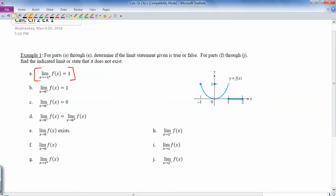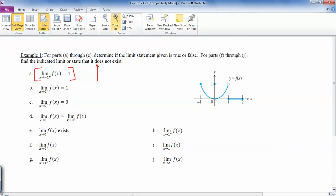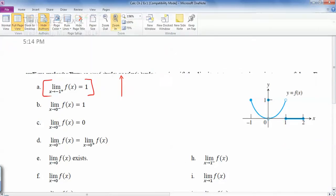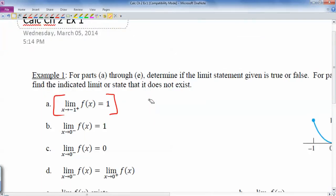So in this one, it's saying as x goes to negative 1 from the right side. So that would be something like this. Let me zoom in a little bit. So as x goes to negative 1 from the right side, so that would be from this side over here.